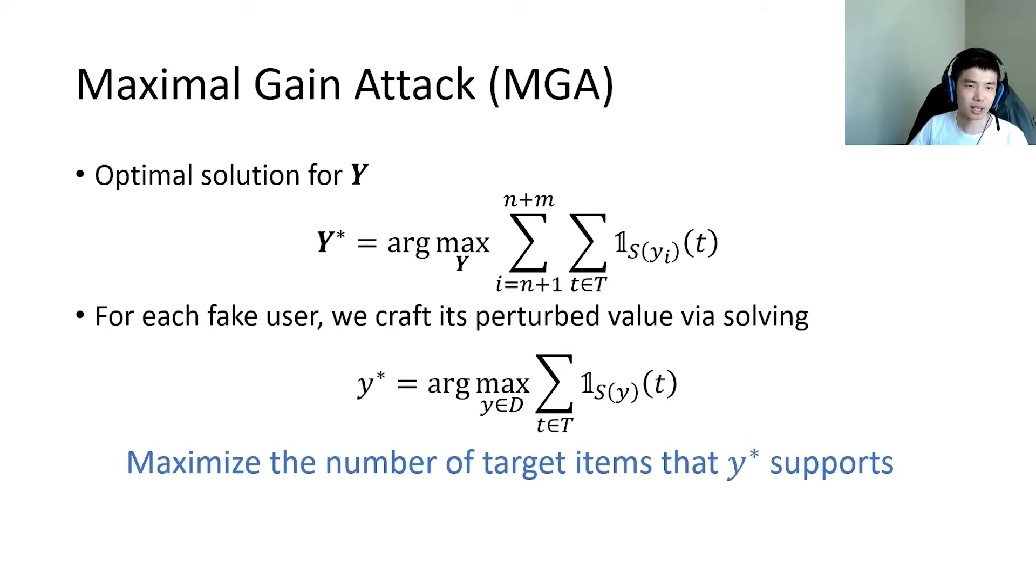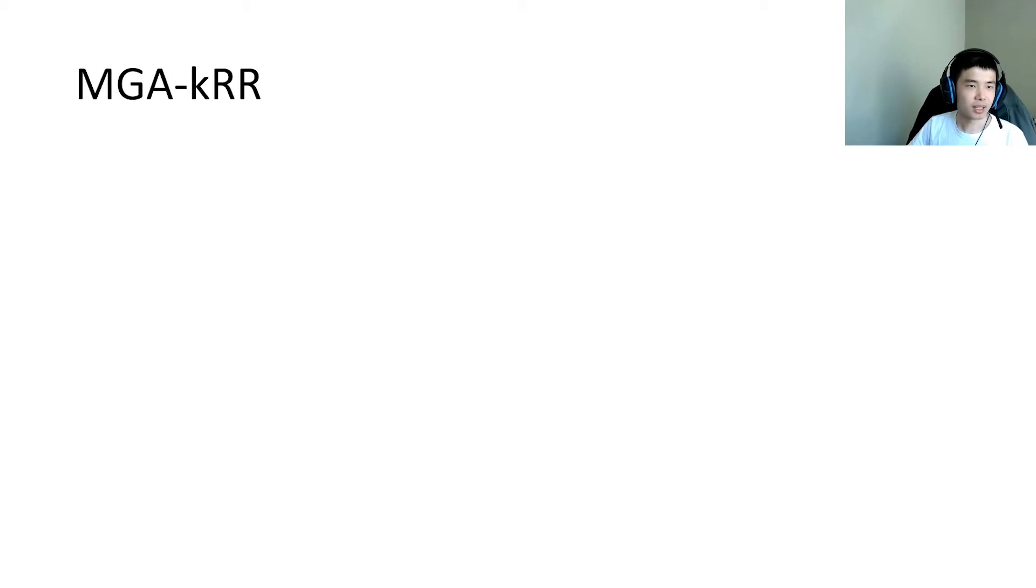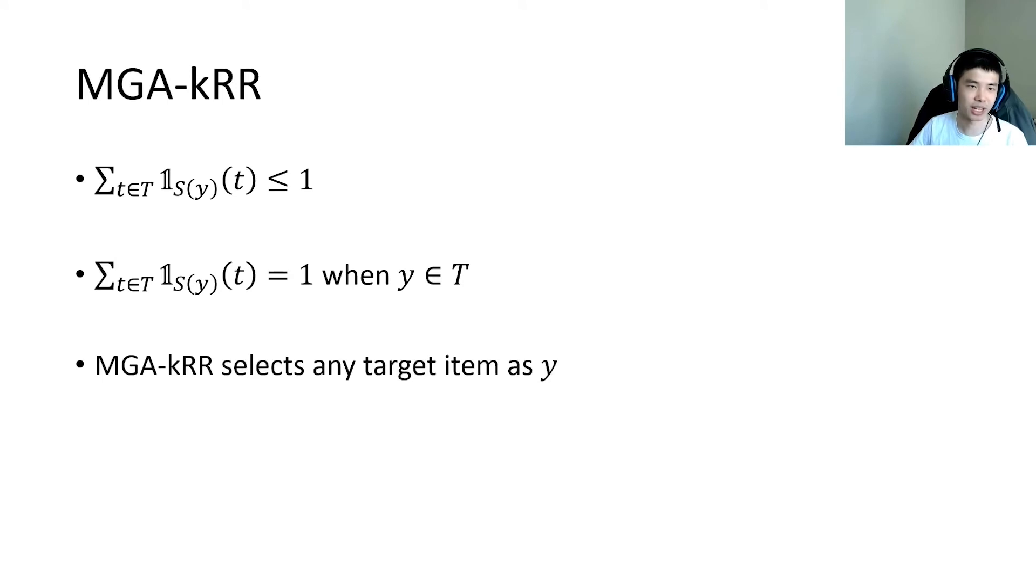In the following slides, I will describe the MGA towards different protocols. In KRR, for each fake user, MGA selects any target item as its perturb value and reports it to the server. We can calculate the maximal gain for KRR as this.